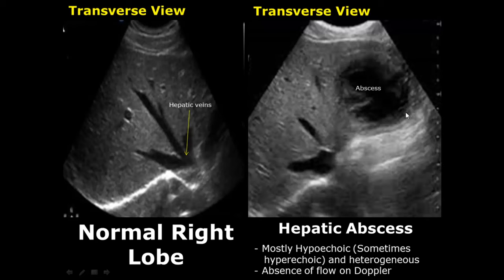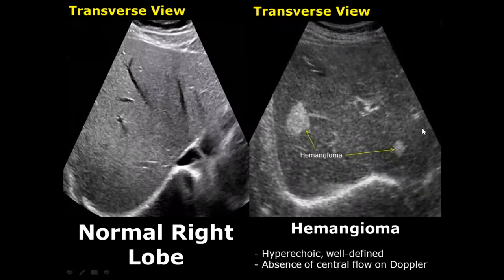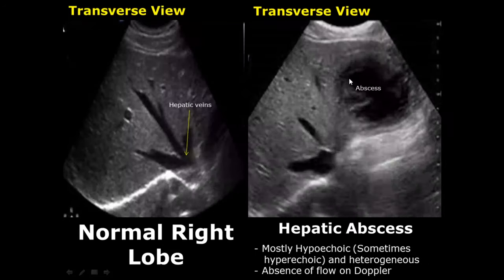An abscess in the right lobe of the liver — this is the transverse view. It is mostly hypoechoic and has heterogeneous areas as well. When we apply Doppler, it will not have any flow.